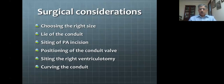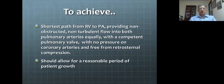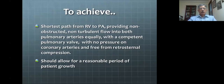Ultimately, when you place a conduit, your aim is to achieve the shortest path from the right ventricle to pulmonary artery, providing non-obstructed, non-turbulent flow into both pulmonary arteries equally — not preferentially to one artery — with a competent pulmonary valve, no compression of the coronary arteries, and freedom from retrosternal compression. Secondly, while no conduit grows with the patient, at least the conduit should allow for a reasonable period before replacement, which is inevitable.